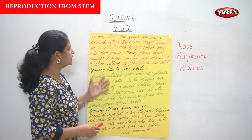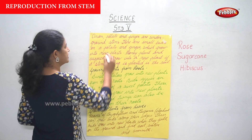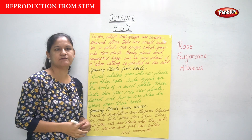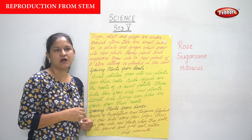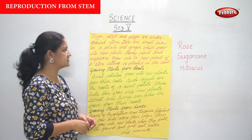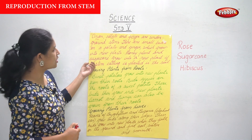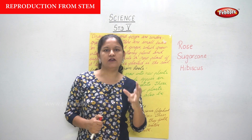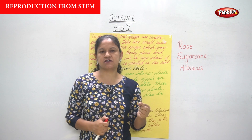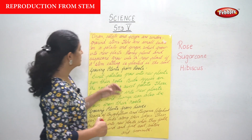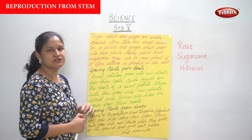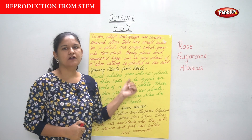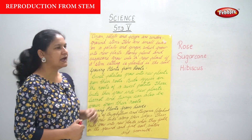Onion, potato, and ginger are all underground stems — plants that grow underground from stems. There are small buds on a potato and ginger. If you have a close look at a potato or a ginger, you will find small buds which grow into new plants. Money plant and sugarcane also grow into a new plant if a stem cutting is planted in the soil.